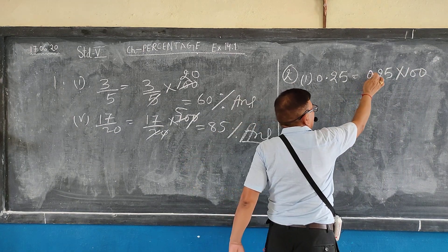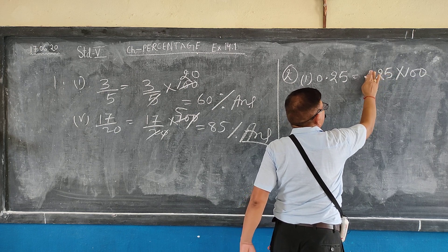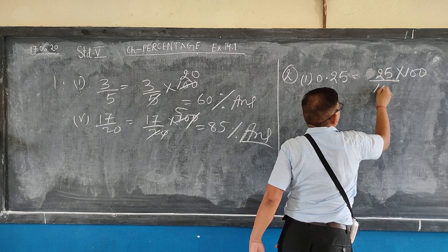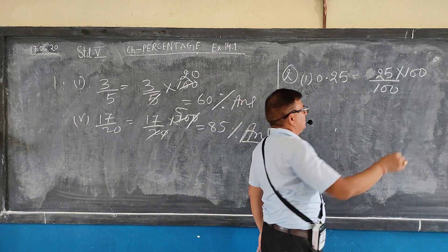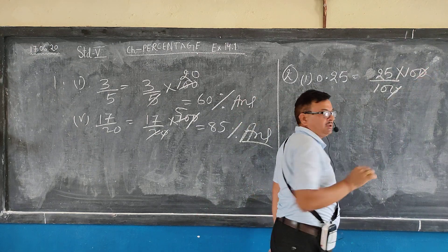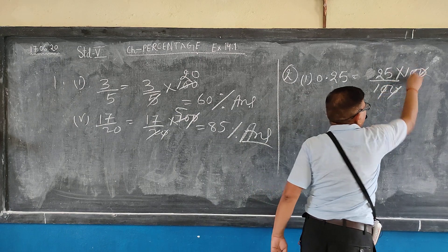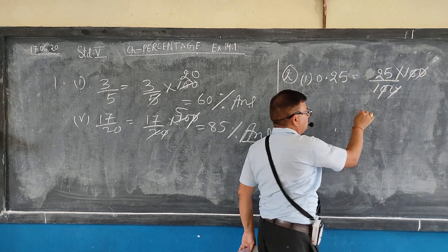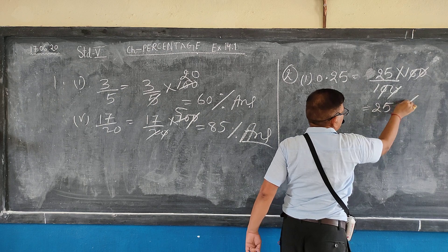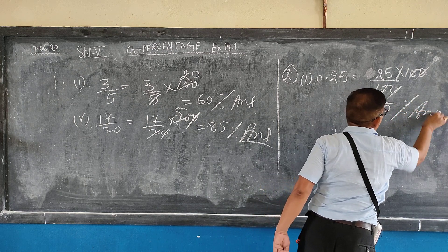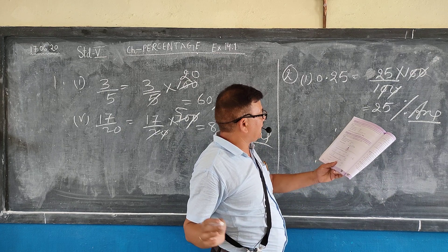To remove the decimal, count the digits after the decimal point — there are 2 digits after the decimal. So multiply with 100, then divide with 100. Cancel, and the result is 25%. Give the sign — this is the sign. The first one is done.